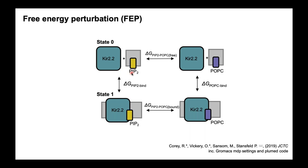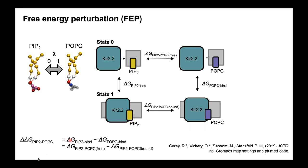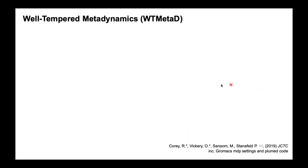With FEP, if you do this for the lipid when free in the membrane and when bound to the protein, you can compare these values using a thermodynamic cycle to get a delta-delta-G between your lipid of interest and a generic lipid. We get quite a similar value to the delta-G of binding as obtained with PMF, for a lot less computational resource. The third method is well-tempered metadynamics, which involves applying Gaussians of energy to the lipid so that it never stays in the same place too long. The more Gaussians you have to apply, the higher the affinity for that site.